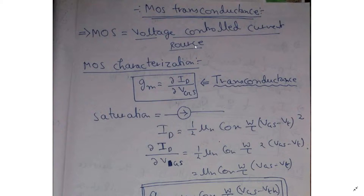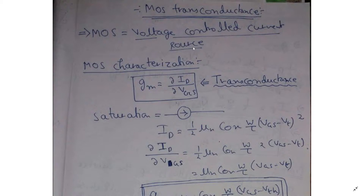So just try to think: for a voltage-controlled current source, how can we determine whether the device is good or bad? What is the parameter? If we are able to make a parameter which will give us an idea that if we change some amount of voltage, then how much change in current we can get — that kind of parameter will basically determine the MOSFET quality. So basically, something like ΔI/ΔV is what we require, because we want to measure change in current with respect to change in voltage.